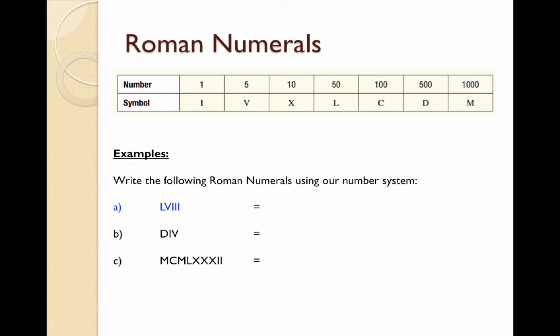Let's have a look at writing some Roman numerals in our own number system. Here we have LVIII. We start off by looking at the L which represents 50. The V which comes after it is smaller, so we're not going to have to do any subtraction. So we're just going to write down 50 to start with. The VIII can be written together as a 5 plus 3 ones which is 8, making our number 58.